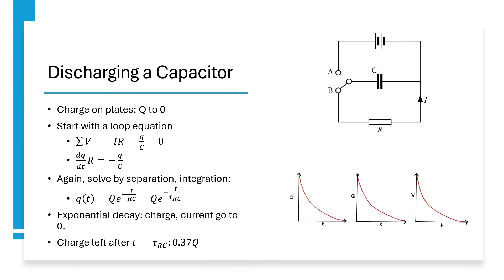Also, note that the time constant for an RC circuit, tau RC, represents the time it takes for 37% of the charge to be left on the plates.